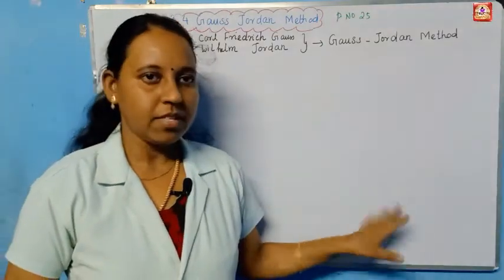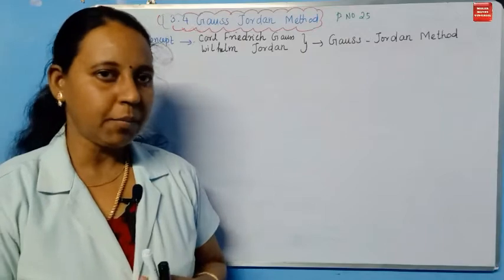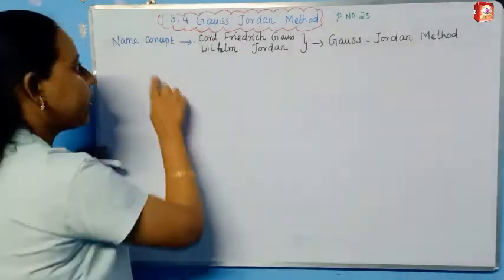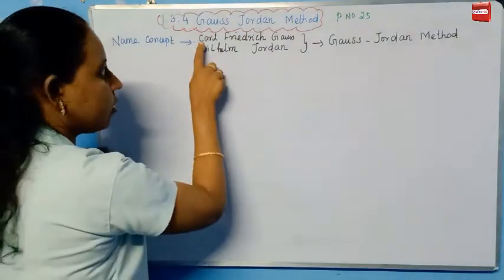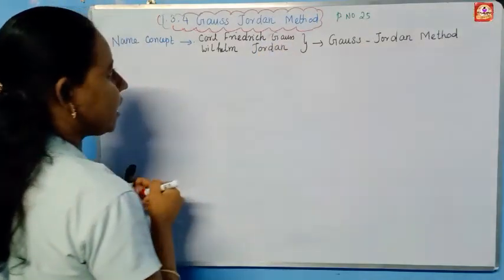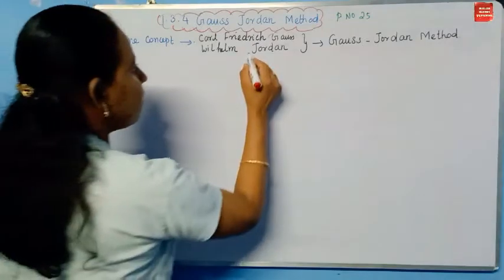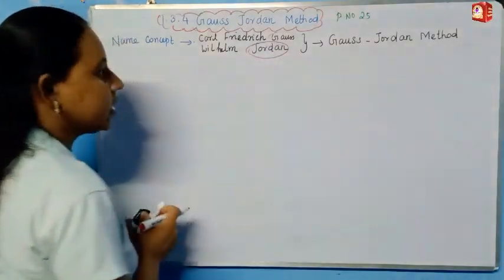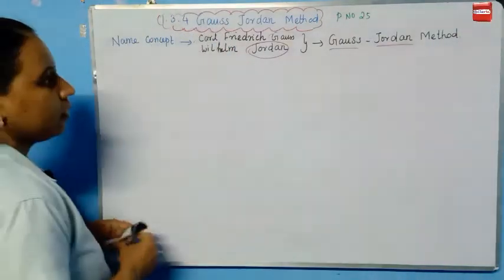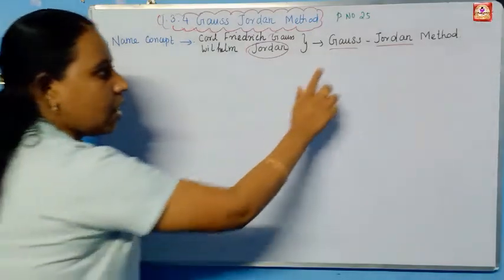It's a very easy concept. First, how did you get the name? The first name is Friedrich Gauss, and the second is William Jordan. If you put both names together, they are called the Gauss-Jordan Method.